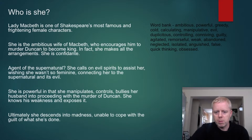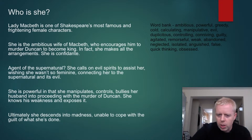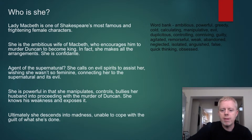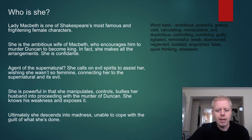Here's a word bank of language you can use when analyzing Lady Macbeth: ambitious, powerful, greedy, cold, calculating, manipulative, evil, duplicitous — which means you can't trust what she's doing or saying, linking her to the theme of appearance and reality — controlling, conniving, guilty, agitated, remorseful, weak, abandoned, neglected, isolated, anguished, false, quick-thinking, obsessed.